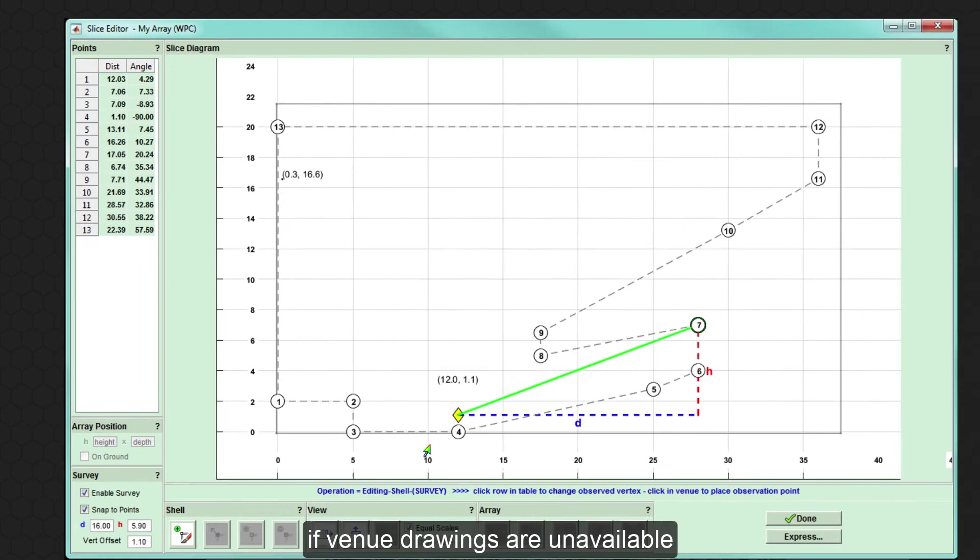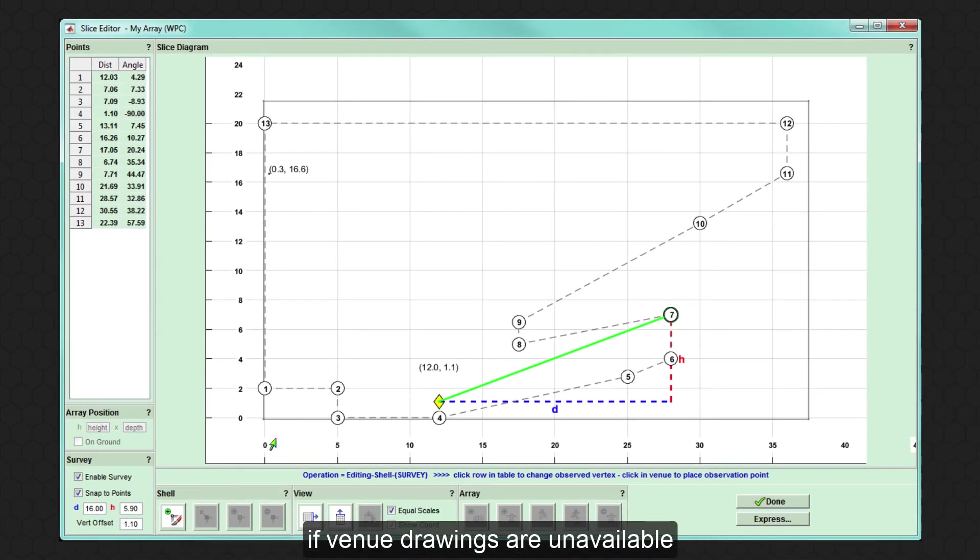Survey mode will be used if venue drawings are unavailable and is useful in venues with multiple balconies, where the height relative to the ground plane is hard to ascertain. Inputting the distance and angle displayed from a good quality laser measure is a quick and accurate way to define the venue geometry.